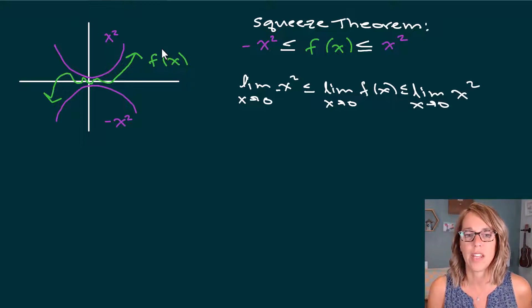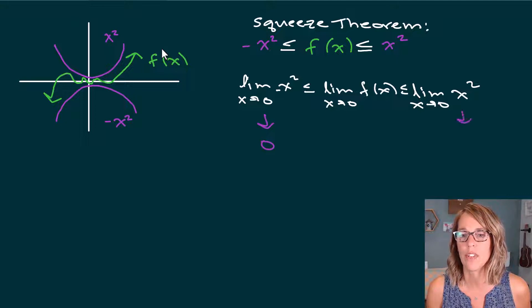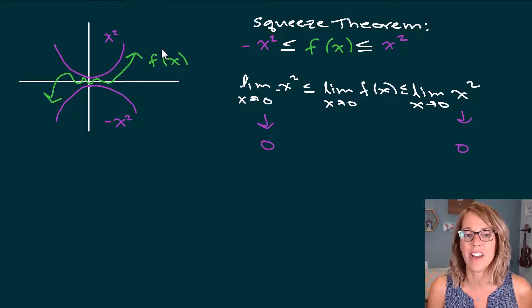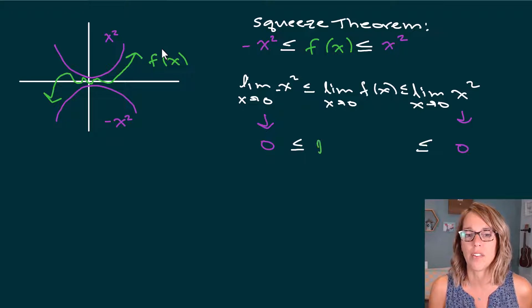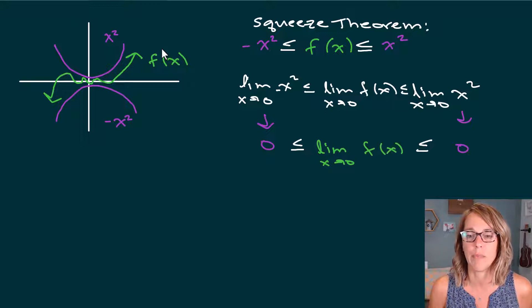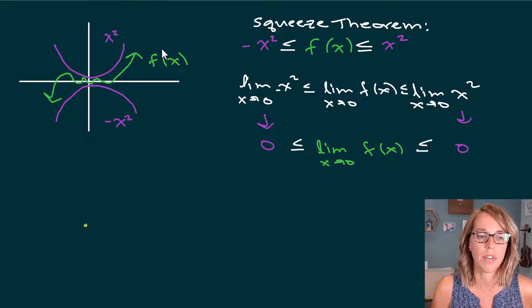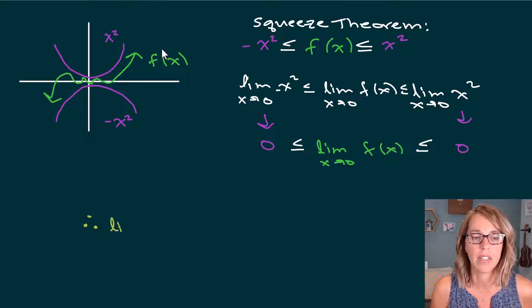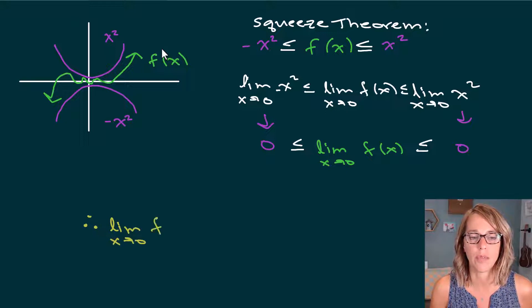Both of these on the outside approach zero as x approaches zero. So that means the limit on the inside also approaches zero. We have found the limit even though we don't know what that function is — just knowing that it's sandwiched means we have found that limit. Therefore, the limit as x approaches zero of that sandwich function is equal to zero.